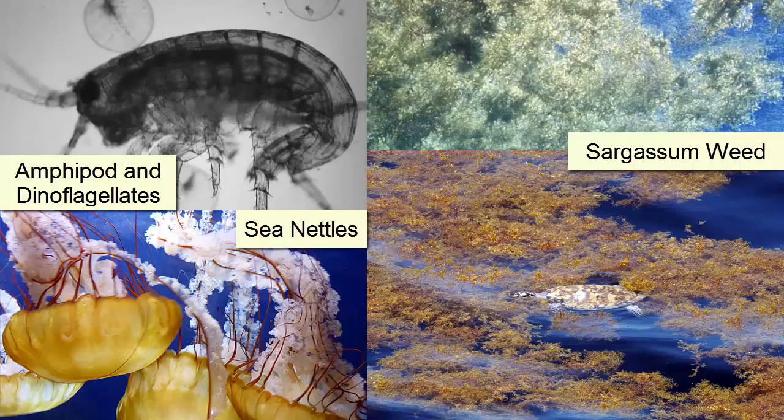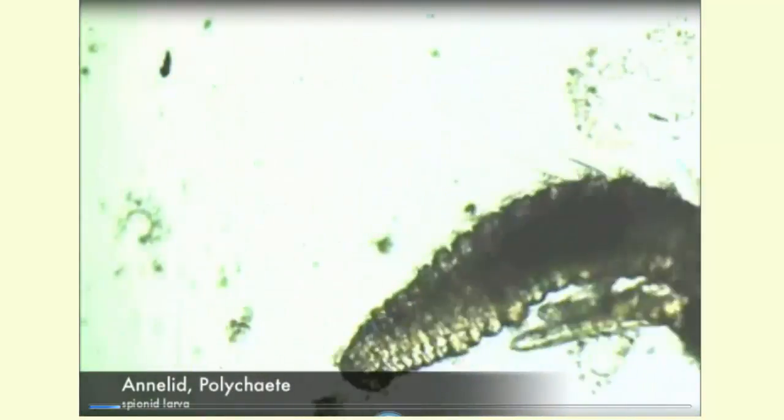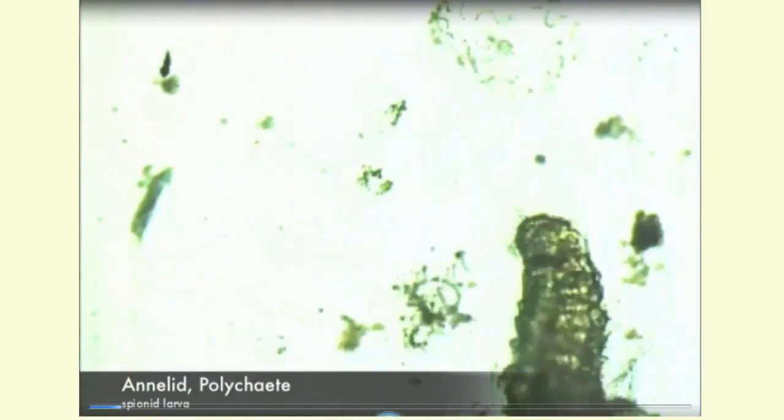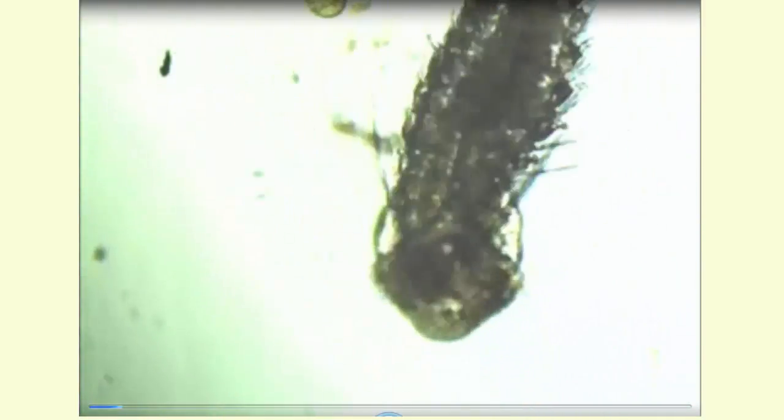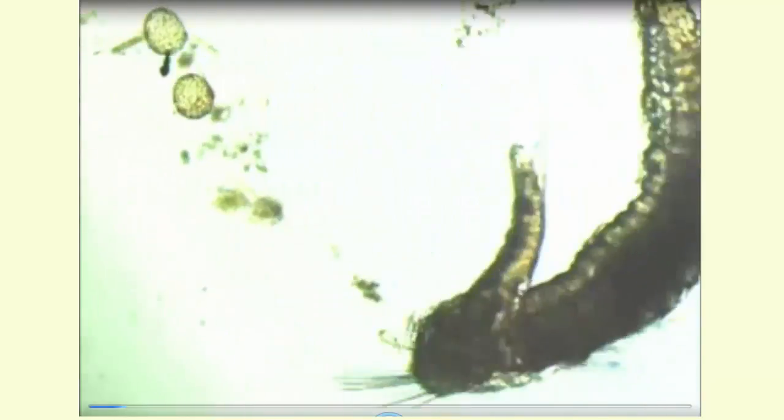Microscopic organisms and floating seaweeds have very different relationships with ocean viscosity. For a microscopic organism, the viscosity of seawater can feel quite strong — like what it would feel like for us to swim through honey. Small organisms can create so much drag when moving through water that they pull or spin the other small organisms around them.